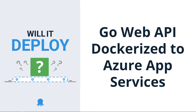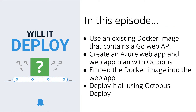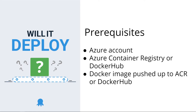Hey, how's it going everybody? My name is Michael Levan. Welcome back to a brand new episode of Will It Deploy? In this episode, we're going to take a look at deploying a Go Web API that's already Dockerized to Azure App Services. We're going to use an existing Docker image that contains a Go Web API, create an Azure web app and an Azure web app plan with Octopus, embed that Docker image into the web app, and deploy it all using Octopus.